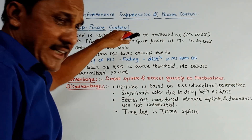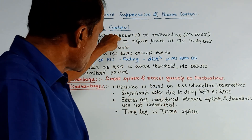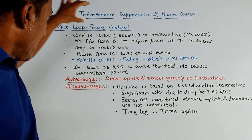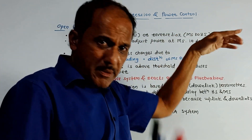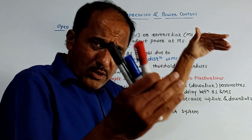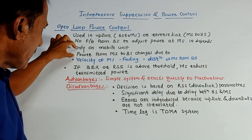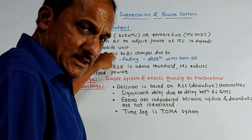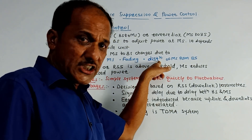In the open loop control system, as the name indicates, there is no feedback. There are two types of links: the uplink (from base station to mobile station) and the downlink or reverse link (from mobile station to base station). Open loop is used in both links, but there is no feedback from the base station to adjust the power. The transmitted power is solely adjusted by the mobile station. The power from the mobile station to the base station undergoes dynamic changes due to the velocity of the mobile station, fading effects, and distance from the base station.